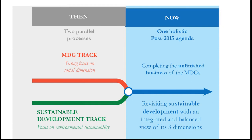Under MDGs, there were two parallel tracks. The first focused strongly on social dimensions like education and health, and the second — the sustainable development track — focused on environmental sustainability. The SDGs, or the 2030 Agenda, brought these together in a unifying framework so that everything would be implemented in a holistic fashion. It is not wise to implement environmental protection without economic and social development — everything should be implemented in a coordinated and holistic manner.